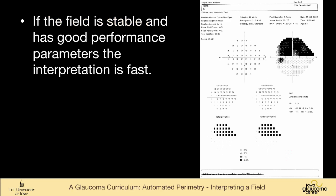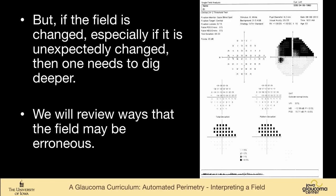If the field is stable, has good performance parameters, the interpretation is fast. You look at performance, you look at the mean deviation, pattern standard deviation, total and pattern deviation here, and if that's all stable, you're pretty much done looking at the field. But if the field is changed, especially if it's unexpectedly changed, then you really need to dig deeper. And what I'm going to do is just talk about a few of these things.